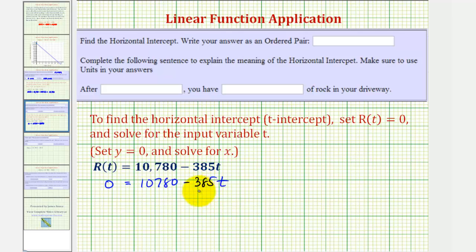Let's go ahead and add 385t to both sides, which would give us 385t = 10,780. Divide both sides by 385. 10,780 divided by 385 is equal to 28.